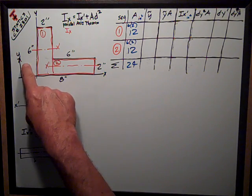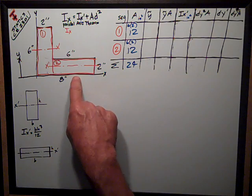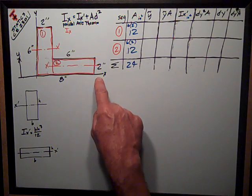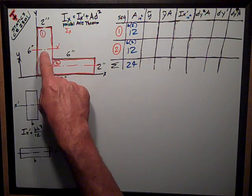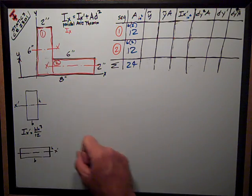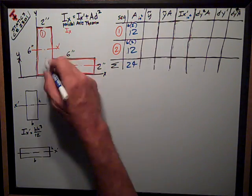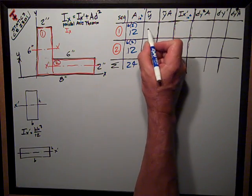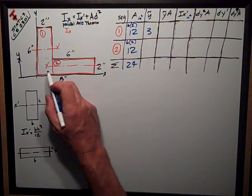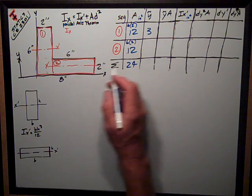Now I want y-bar, y tilde, a distance from the axis I'm taking moment of inertia about, this x-axis, to the centroid of the piece. This is just what we've been doing. Centroid for segment 1 is half of the height of 6 inches or 3 inches. Segment 2 is half of the 2 inch height or 1 inch.